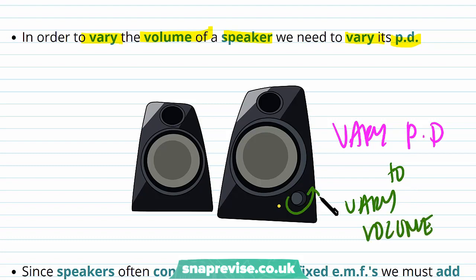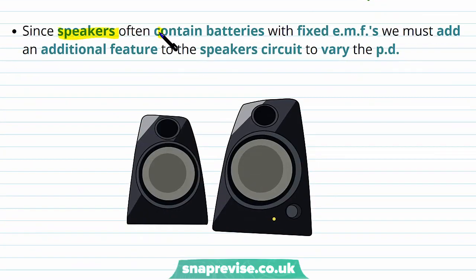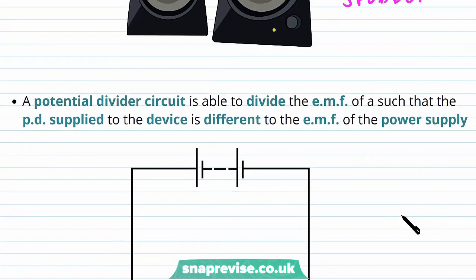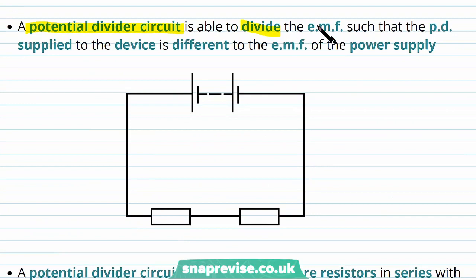In order to vary the potential difference we need to vary the EMF. But the EMF of a battery is fixed, and it's quite inconvenient to have to keep changing the battery for different EMFs. So since speakers often contain batteries with fixed EMFs, we must add an additional feature to the speaker circuit to vary the potential difference, rather than having to change the battery.